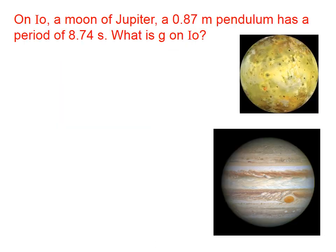Let's do another problem. On Io, a moon of Jupiter, a 0.87 meter pendulum has a period of 8.74 seconds. What is the acceleration due to gravity on Io?